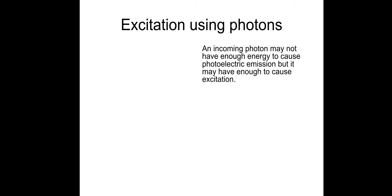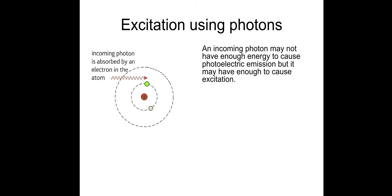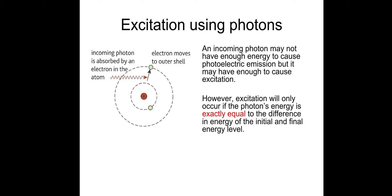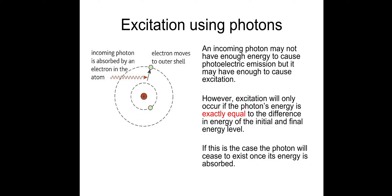The same can also occur with photons. An incoming photon may not have enough energy to cause photoelectric emission, but it may have enough to cause excitation. In this diagram, an incoming photon is absorbed by the electron in the atom and the electron moves to an outer shell. However, excitation will only occur if the photon's energy is exactly equal to the difference in energy of the initial and final energy level. If this is the case, the photon will cease to exist once its energy is absorbed. The reason it has to be exactly equal is because photons deposit their energy as an entire packet of energy, or quanta.